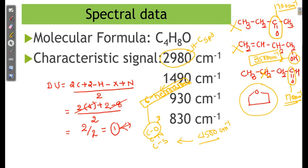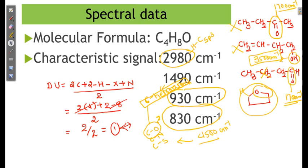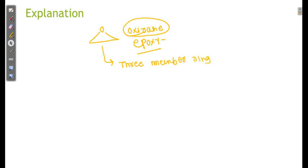Now, the remaining possibility fits because this has SP3 carbon-hydrogen and carbon-oxygen. But what about the 930 and 830 cm⁻¹ signals? When there are signals at 930 and 830, if I have an oxygen structure, this is oxirane or I can say epoxy. This is a 3-membered ring and 3-membered rings are not stable.